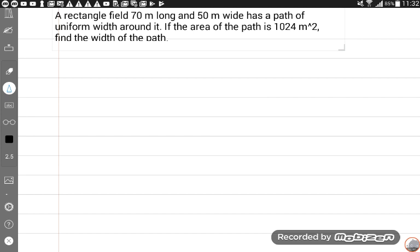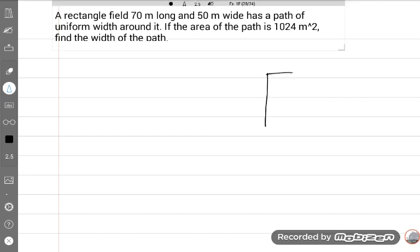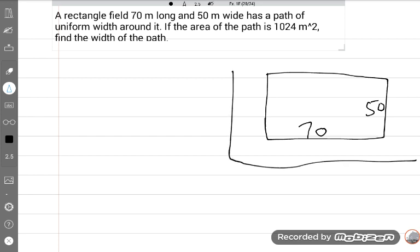A rectangular field, 70 meters long and 50 meters wide, has a uniform path of uniform width around it. So this is the uniform width around it. This is the whole area including the path.